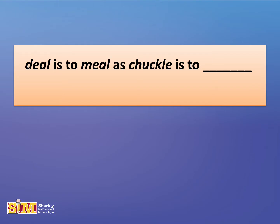Usually, an analogy exercise will be a set of three words and a blank line, which you must fill in with the correct answer. Take a look at this one. It says: deal is to meal as chuckle is to blank. You have to figure out the relationship between the first two words in order to fill in the blank. Here's the thinking process: deal and meal have something in common — they rhyme. So I must think of a word that rhymes with chuckle to fill in the blank. How about knuckle? Knuckle rhymes with chuckle, so knuckle is a good choice to put in the blank.